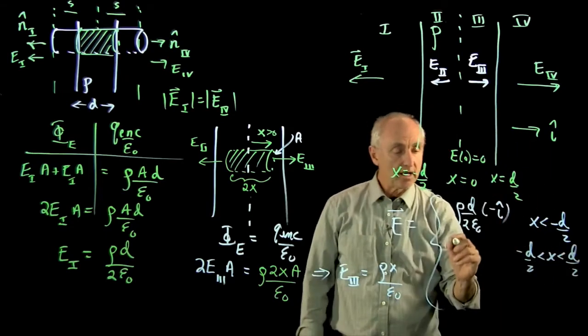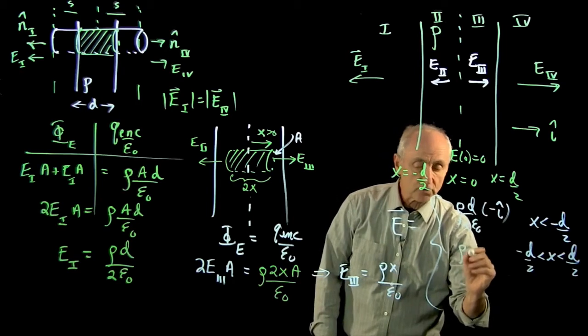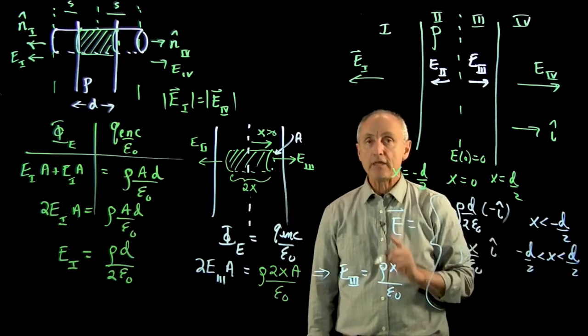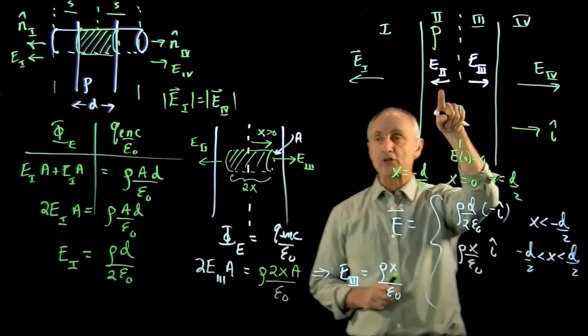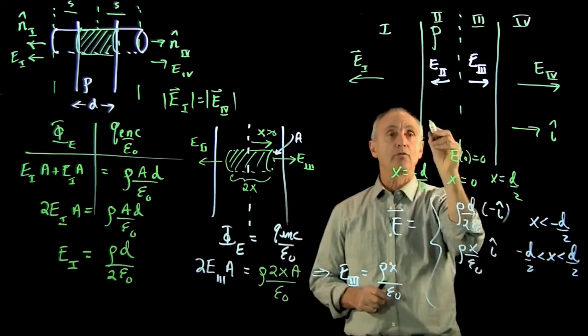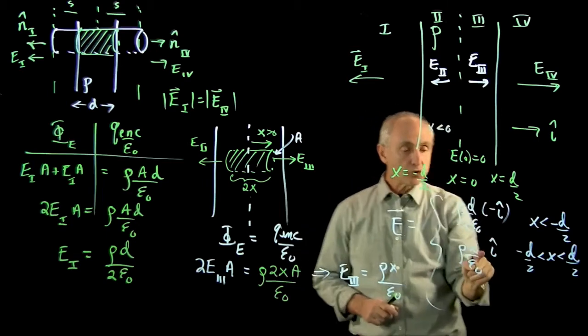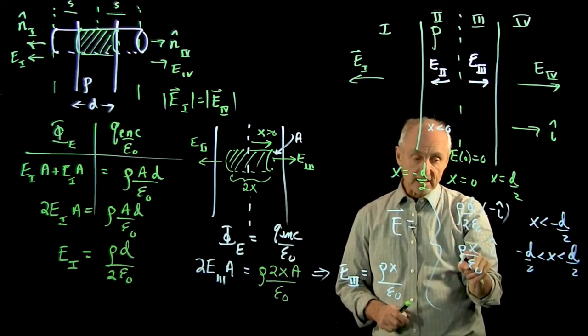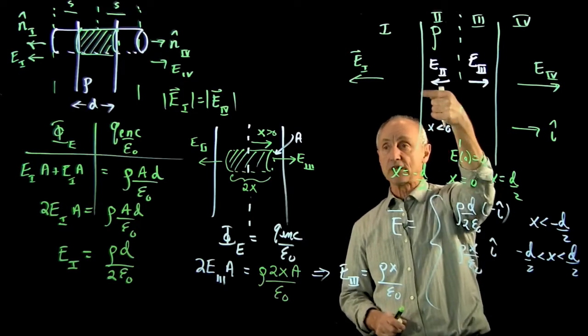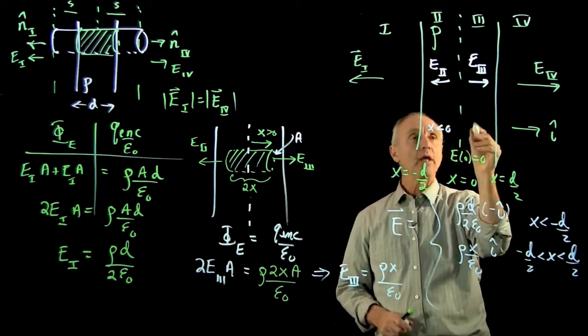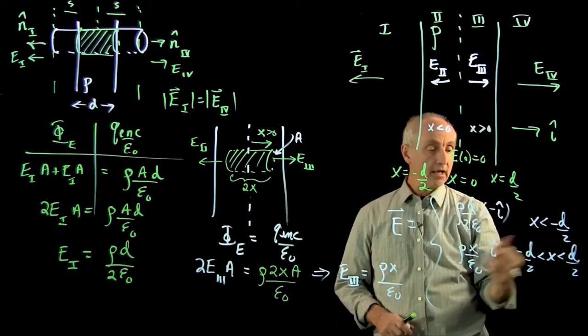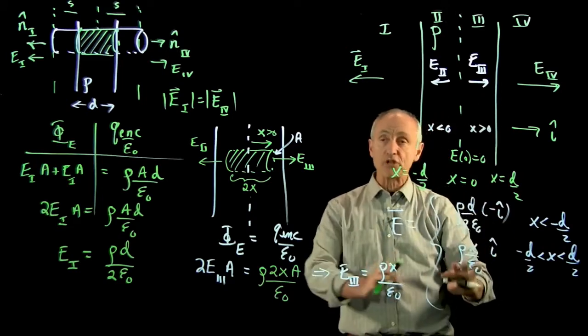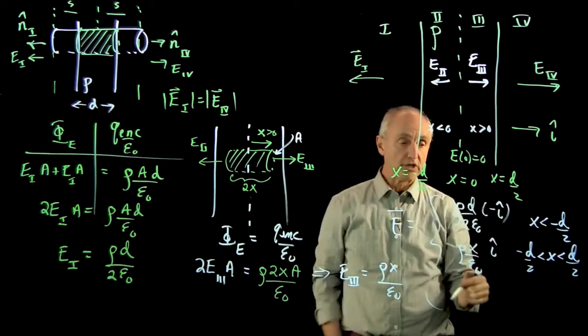Inside the slab, I'm going to write my electric field as rho x over epsilon 0 i hat. And you may think that, wait a second, it's pointing in a different direction for negative x over here. But the direction here is when x is negative, it's in the negative i hat direction, and that's precisely the way the field points. When we're on the positive side and x is positive, it's pointing in the positive i hat direction. So this expression handles the field in that region.